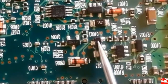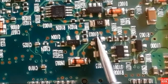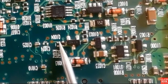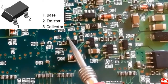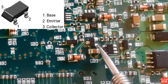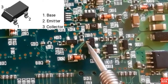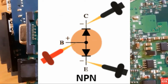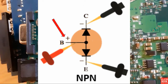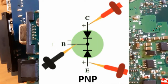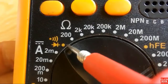Let's begin by testing transistors with three terminals. First, you should locate the base, collector, and emitter. For an NPN transistor, you put the red probe on the base and the black probe once on the collector and once on the emitter, and you get a reading. For a PNP transistor, you put the black probe on the base and the red probe once on the collector and once on the emitter, and you get a reading. We'll select the diode option in the multimeter.